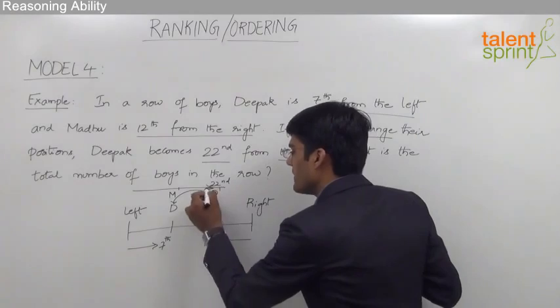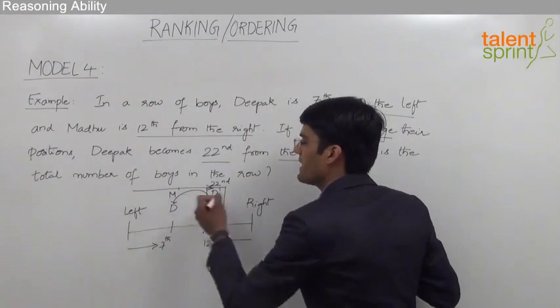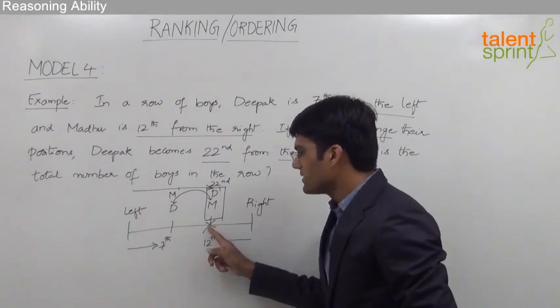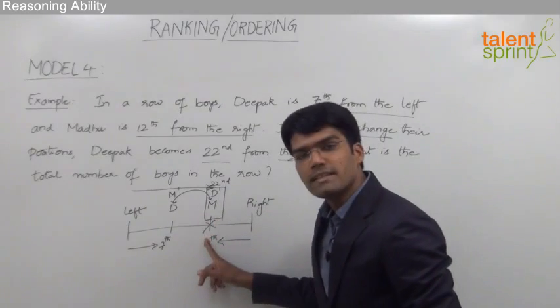As you can see, we have now come to know the same position from two different ends of the row. That is, this particular position is 22nd from the left end and 12th from the right end.